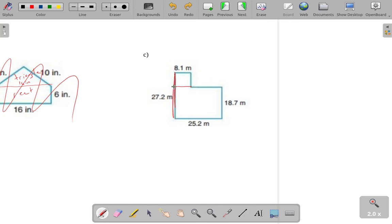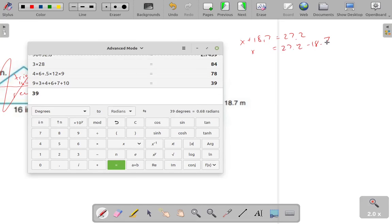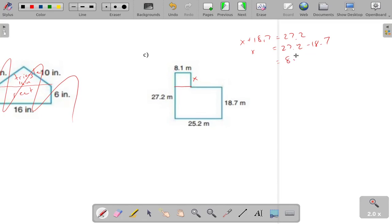So, to figure out that distance, well, I know this distance right here is 27.2, and this distance right here is 18.7. And the combination of those, or sorry, this one plus this unknown distance, this one up here, must be equal to this 27.2. So, that means I could just say this distance right here, I'll call it x for the moment. If x plus 18.7 is equal to 27.2, then that means x is equal to 27.2 minus 18.7. And that's something I could ask the calculator. 27.2 minus 18.7, which gives me 8.5.